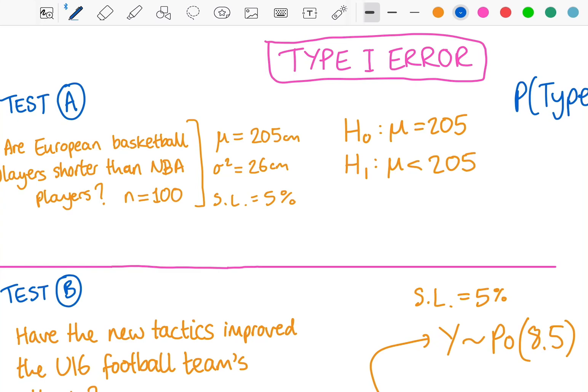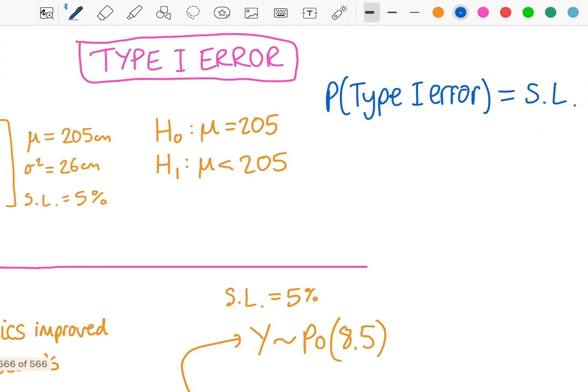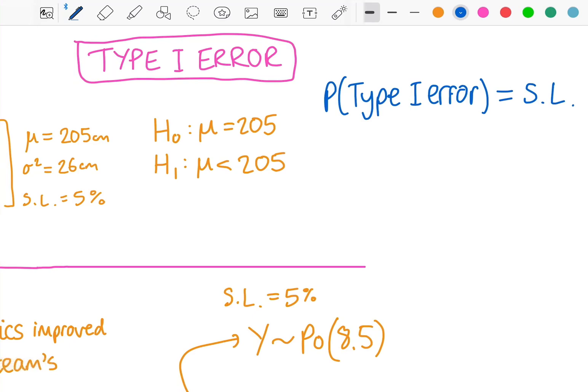This is normally distributed even if the original data individually was not, because I'm looking at a mean of 100 players, which is more than 30, obviously. So my alternate hypothesis is that the mean is less than 205. The significance level here is the percentage of uncertainty almost that I'm allowing in this test. And what it's saying is, if you get an average height that's this low, then there's a less than 5% chance that that could just occur by chance.